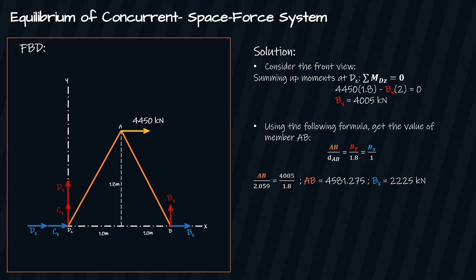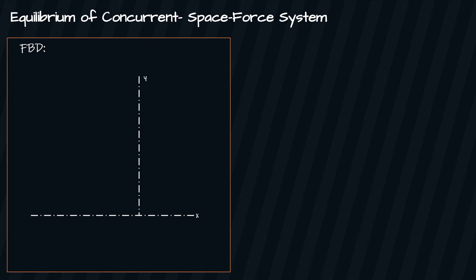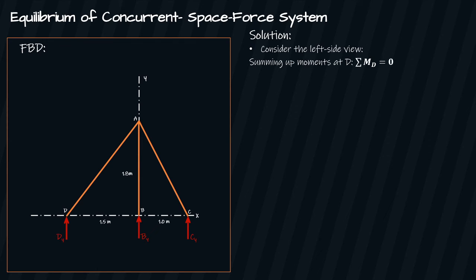Therefore AB is equal to 4581.275 kilonewtons. Then we consider the left side view of the structure. Now sum up moments at point D. Again assuming clockwise direction of moment to be positive, so we have negative By times 1.5 minus Cy times 2.5 equals zero. We have a value of By which is equal to 4005, and so we can get the value of Cy.